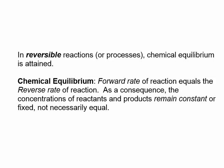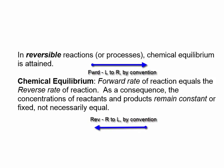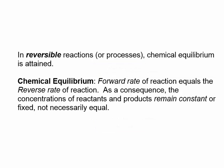In reversible reactions or processes, chemical equilibrium is attained. Chemical equilibrium can be defined as the forward rate of reaction equaling the reverse rate of reaction. As a consequence of these equal rates, the concentrations of reactants and products remain constant or fixed — not necessarily equal. So the prefix 'equi' in chemical equilibrium implies that the rates are equal, not the concentrations.